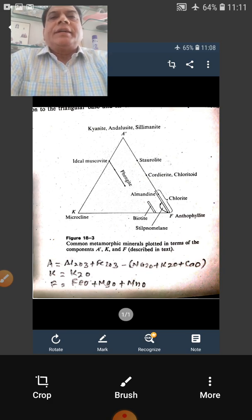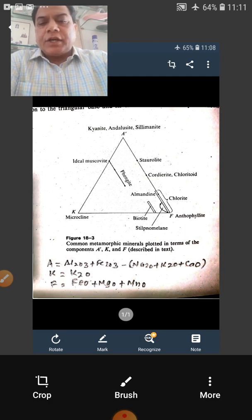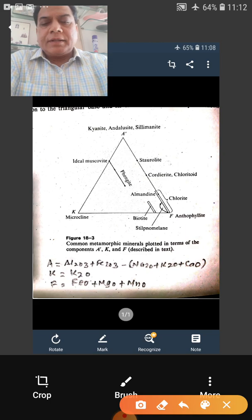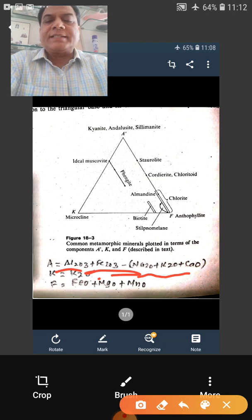This AKF diagram was also developed by Eskola in 1915 and in this you can see that the A is your Al2O3 plus Fe2O3 minus Na2O plus K2O plus CaO. This is different from ACF diagram.